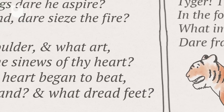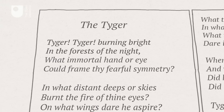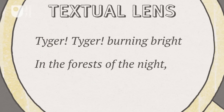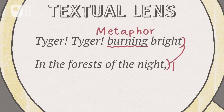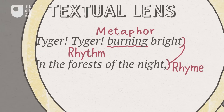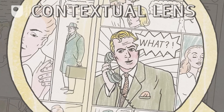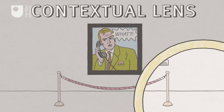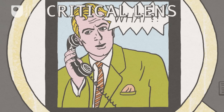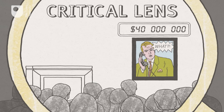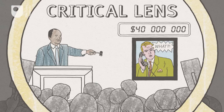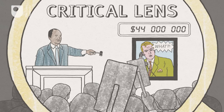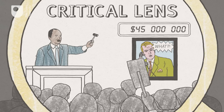When we study it, we can focus on different elements of the phenomenon and use different lenses. We can use a textual lens to look at how language is manipulated in various ways to create a particular effect. We can use a contextual lens to examine how meaning is tied to the social, cultural and historical context in which the communication takes place. And we can use a critical lens to examine the values and assumptions embedded in the context — for example, how value is assigned to acts of creativity and the implications this has for society.